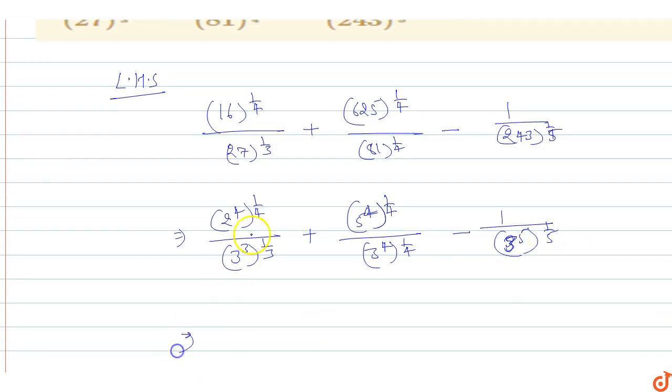So this equals to, the 4 cancels out, the 3 cancels out. So this is equal to 2, 5 by 3.